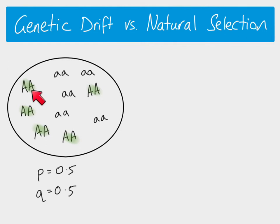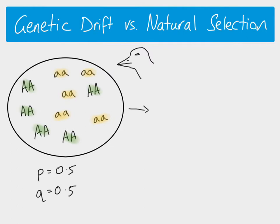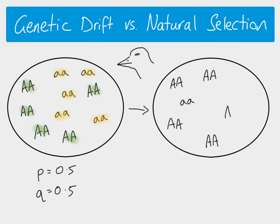The dominant allele gives the insects a green color and the recessive allele gives them a yellow color. In natural selection, the change in allele frequencies is due to a selection pressure. In this example, we're looking at a predator that is able to spot the yellow individuals more easily because they are not as well camouflaged. As a result, the green individuals are more likely to survive, reproduce, and pass on the dominant allele to the next generation. Looking several generations down the road, we're going to see a change in allele frequencies.